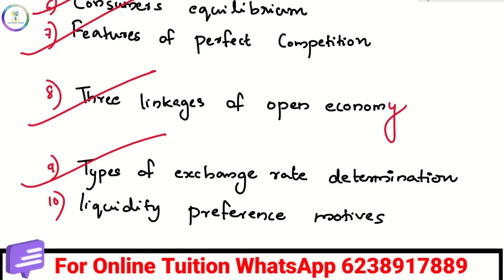We will learn the three types of liquidity preferences — the three types of cash in our hands: precautionary, transactions, and speculative.